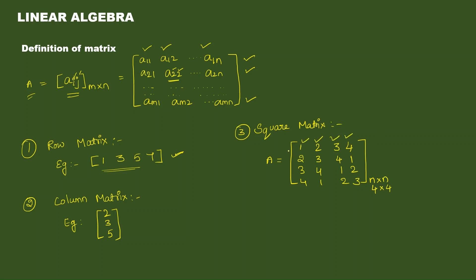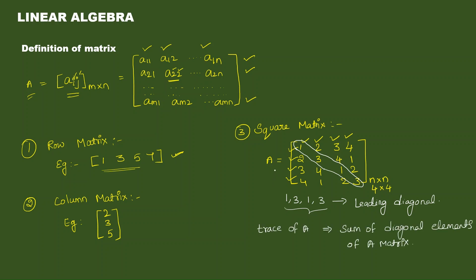The 4 cross 4 matrix has 4 columns and 4 rows. The diagonal of this matrix containing elements is called the leading or principal diagonal. The sum of the diagonal elements of a square matrix A is called the trace of A. In this example matrix, the trace of A is 8.